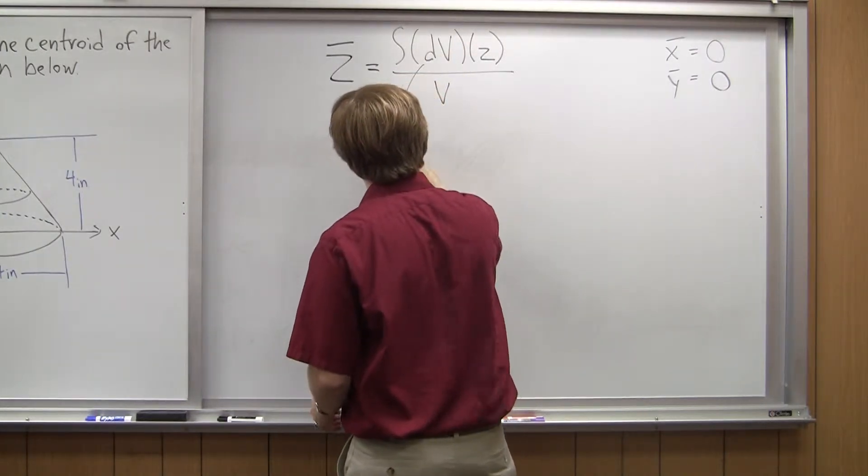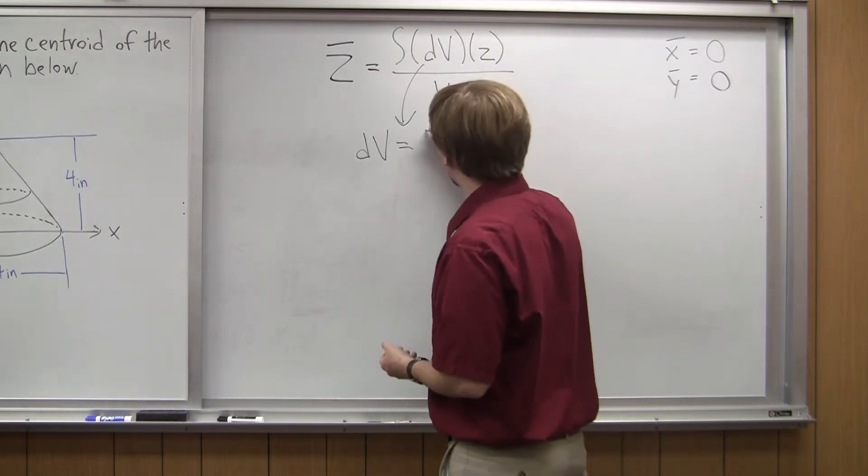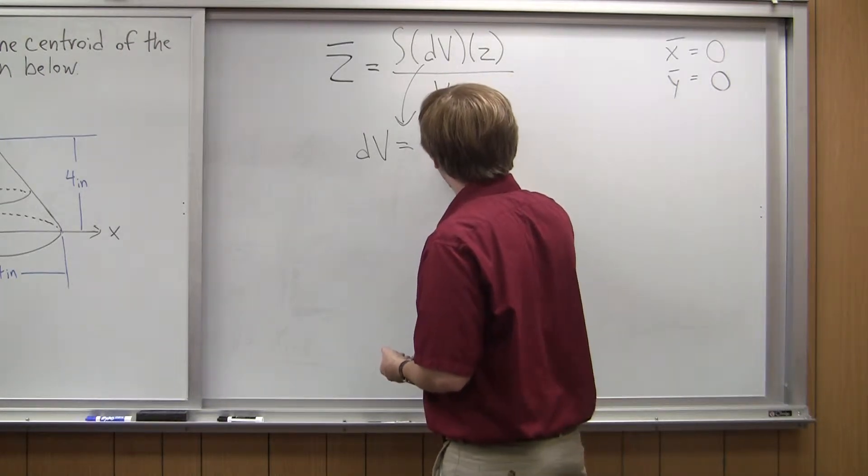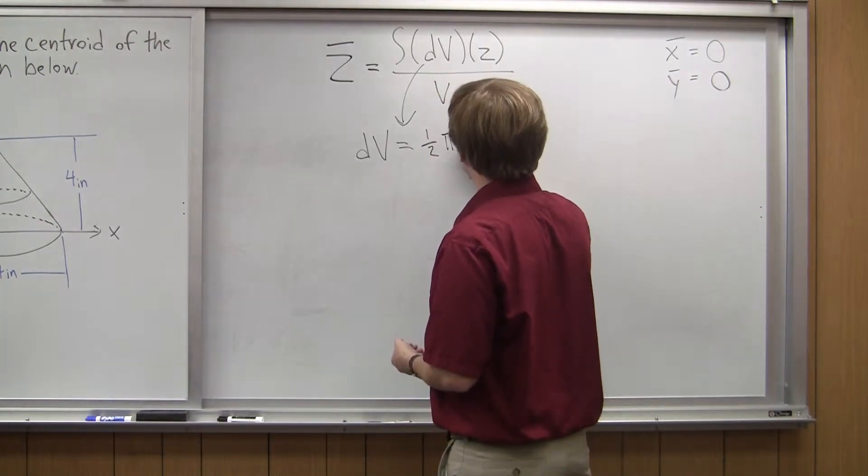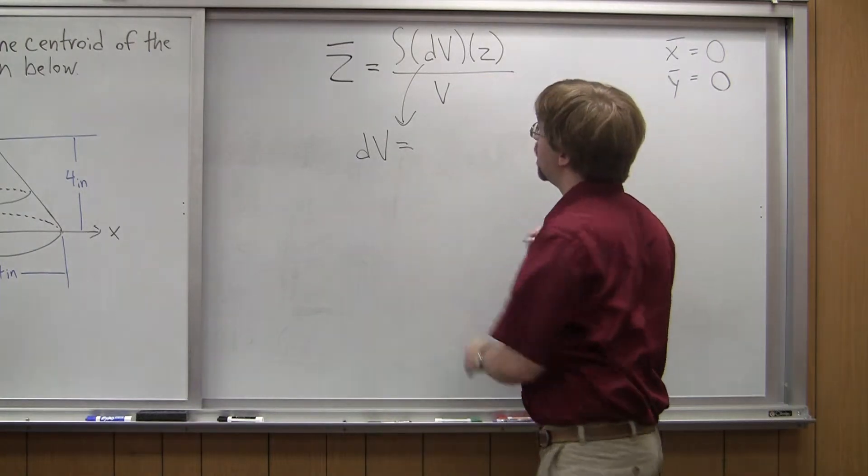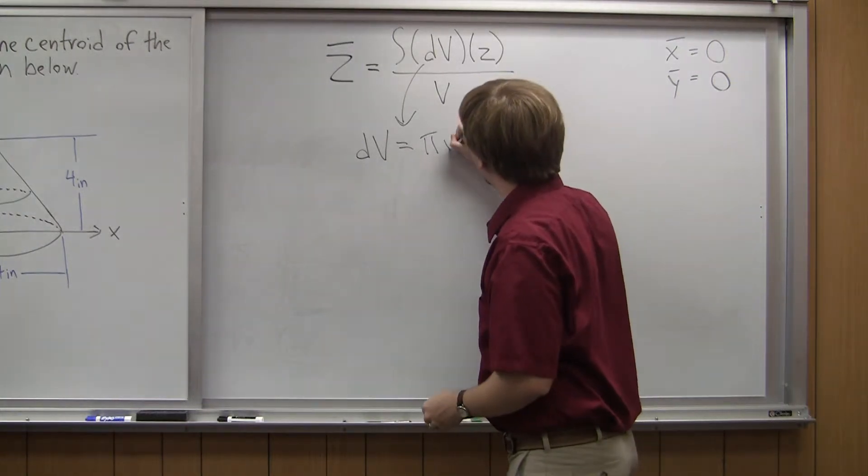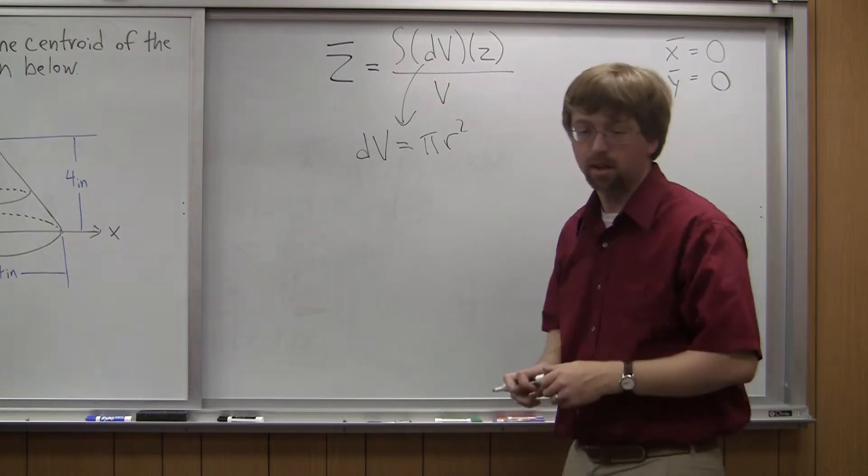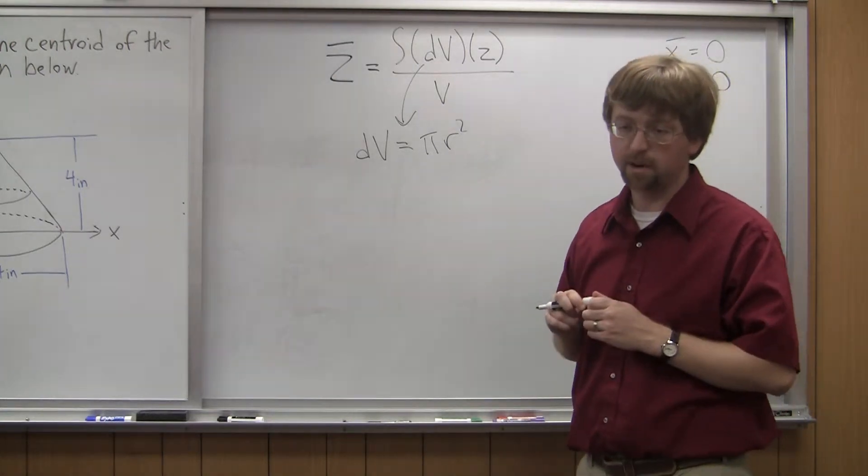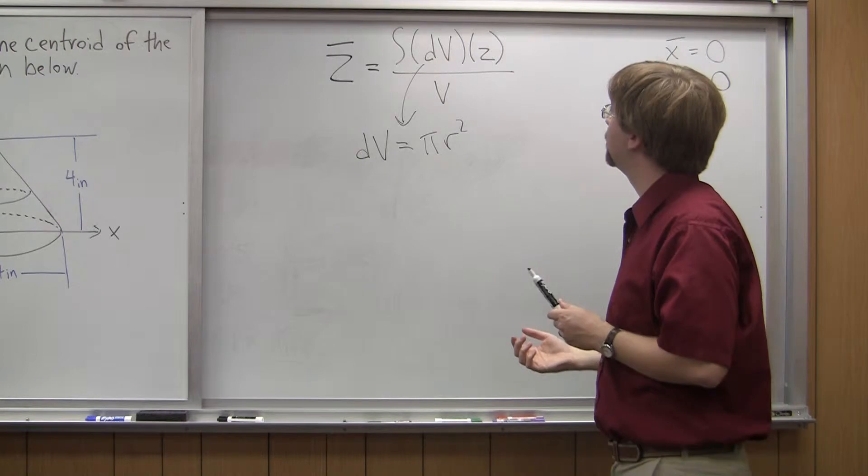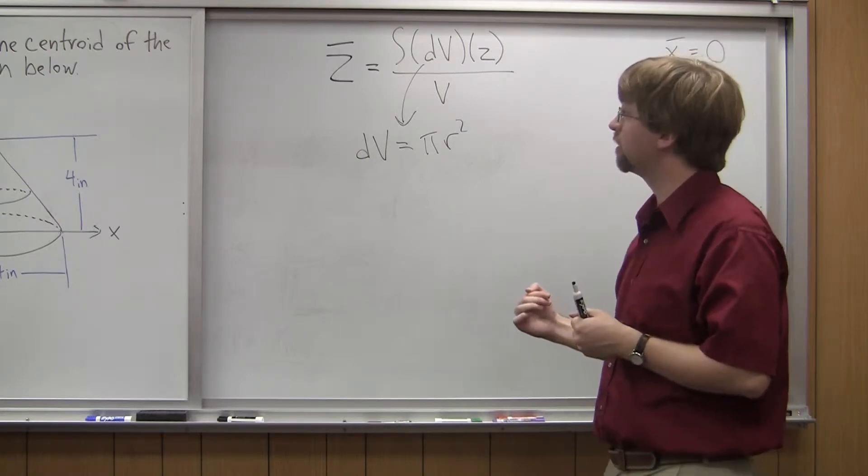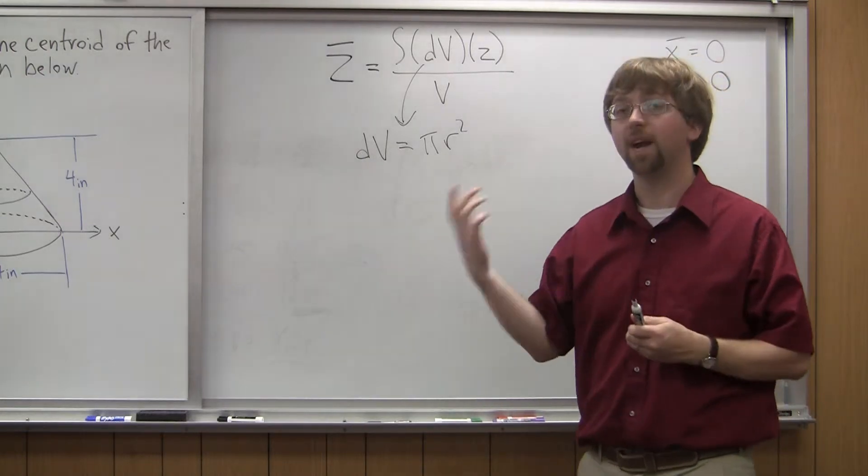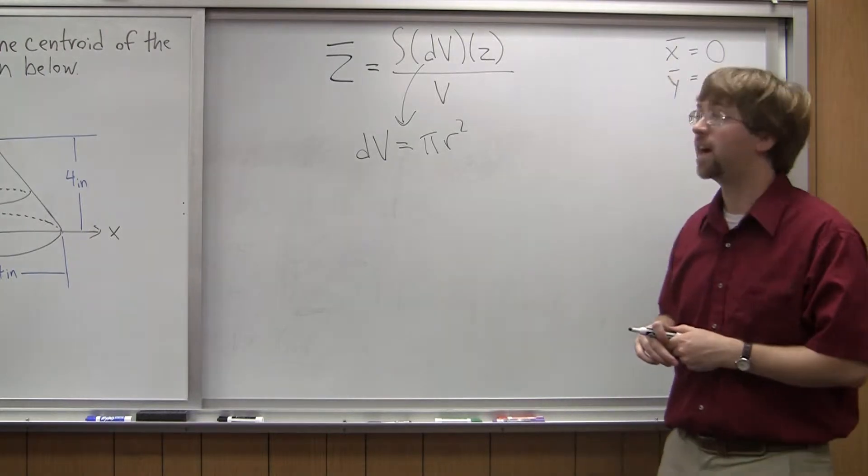So if I go down here, dv is going to be the area of a circle, or pi r squared. So that's going to be the area of my circle. But I need to do this in terms of z. So I'm looking to find what is the radius at any given value of z.